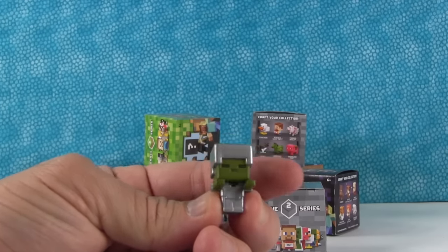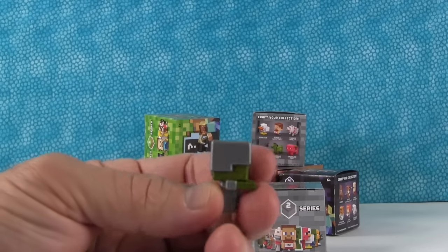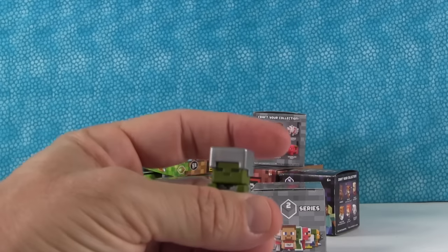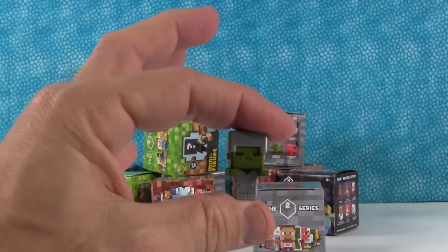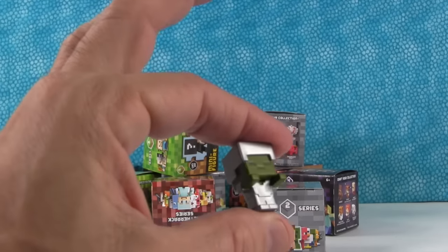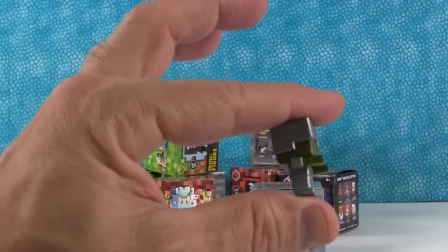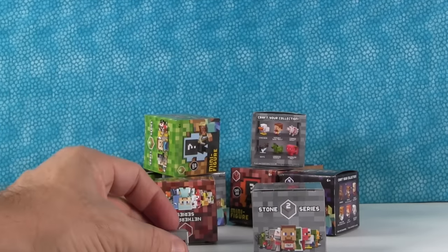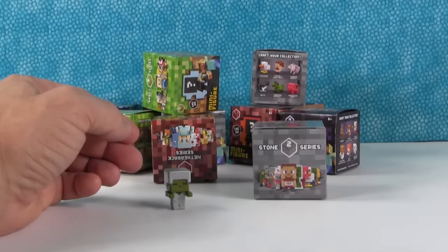So who is this? This is the zombie with iron armor. Very cool. Very silvery. He is, he's like ahhhhhhh. I can't touch this. Alright, zombie with iron armor.